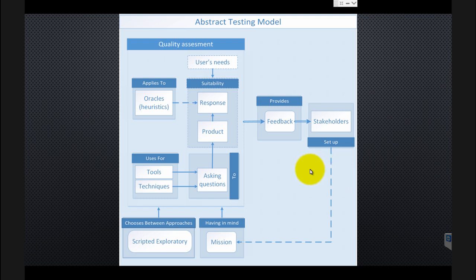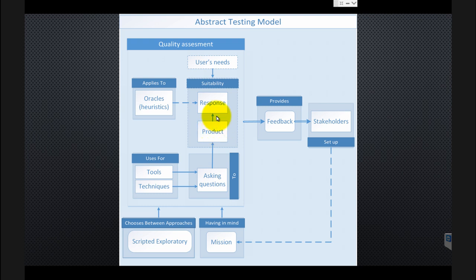Now let's see how we can read it all together. Stakeholders set up the mission for the tester before testing starts. Then the tester, having this mission in mind, chooses between approaches: scripted, exploratory, or something in between. He takes all of this into account and uses tools and techniques for asking questions to the product. The product generates responses, and the tester applies oracles — which are heuristics — to those responses to evaluate the suitability of the product to the users' needs. When finished, the tester creates the feedback and provides it to the stakeholders.